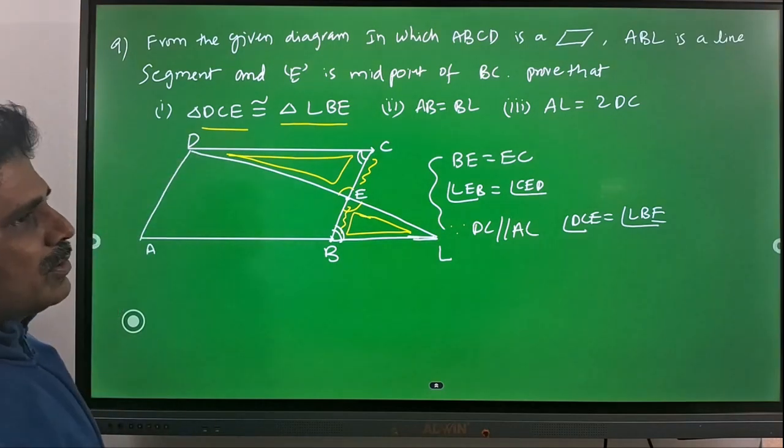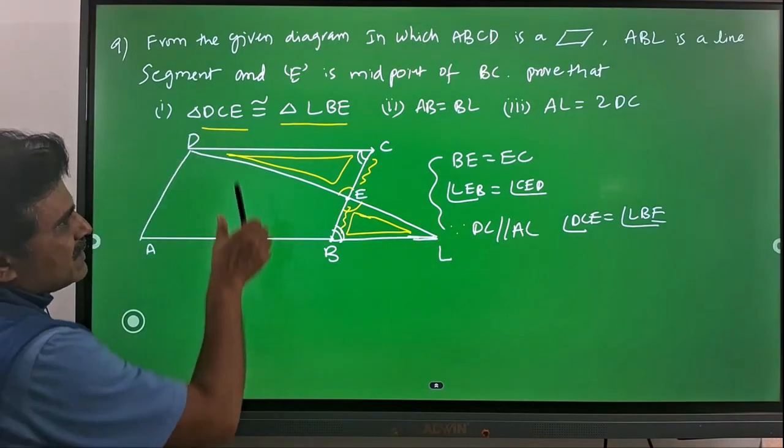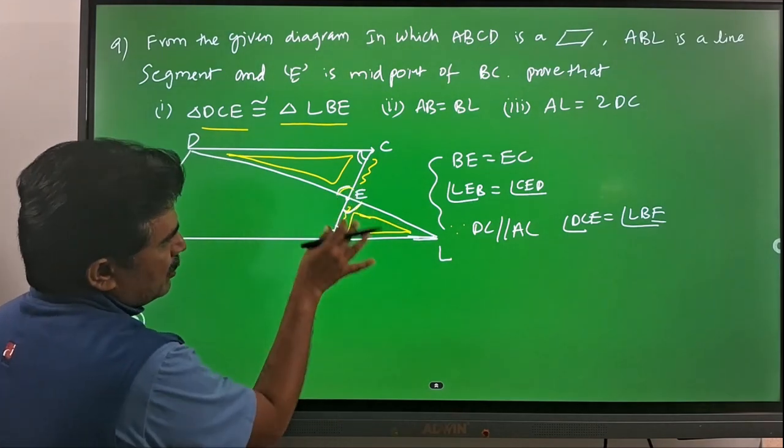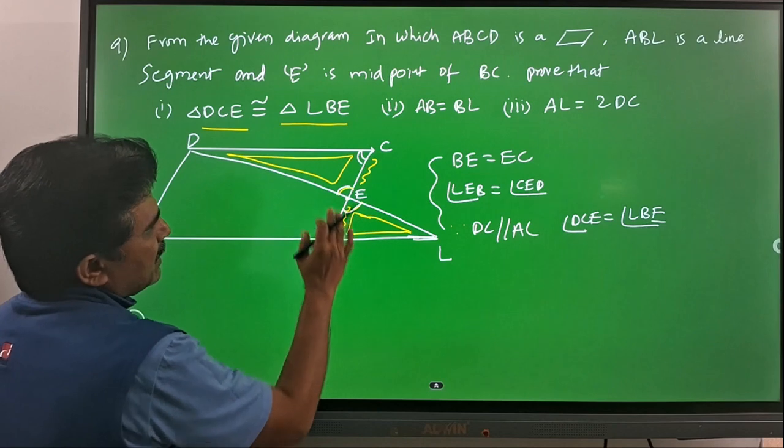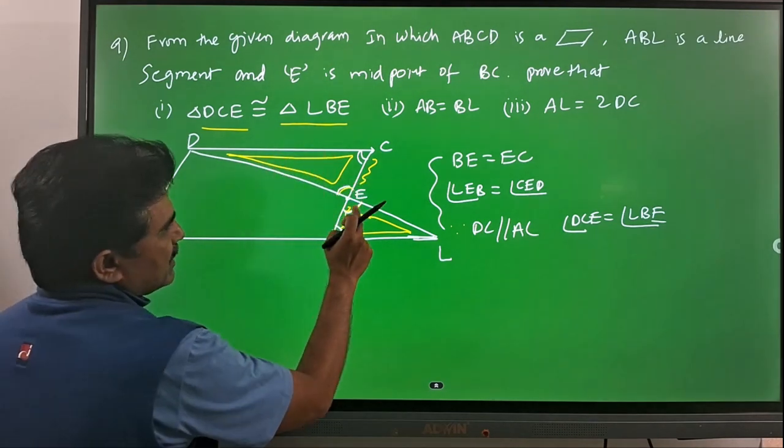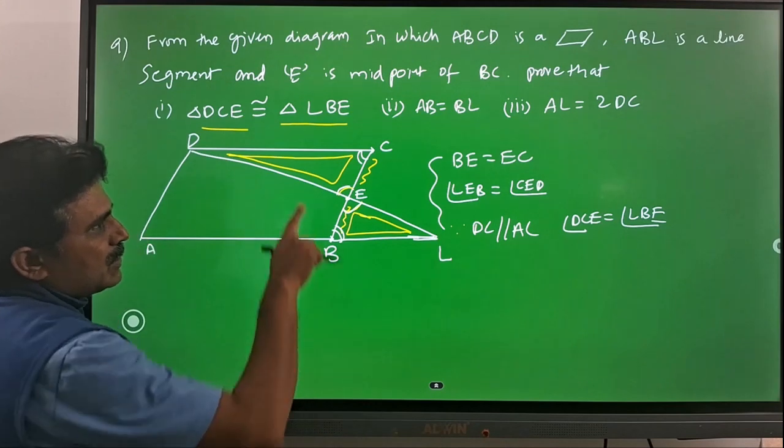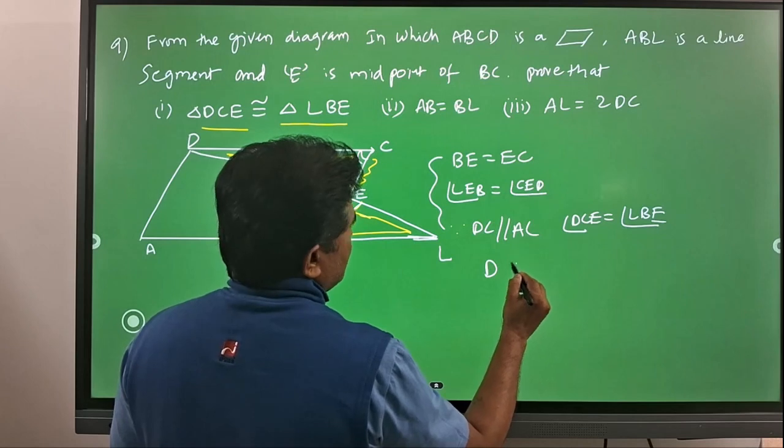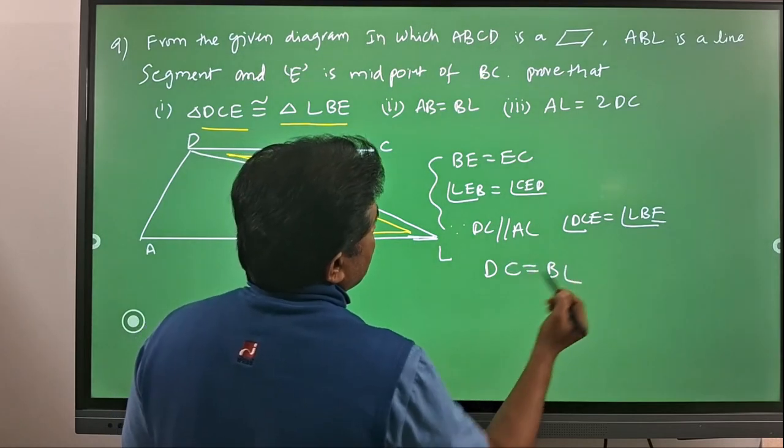These two are congruent and they respect to sides like DC and BL. We have equal angles, and they respect to opposite sides. DC is the opposite one for that angle, and for this angle BL is the opposite one. Those two are the same. That means from this we can say DC is equal to BL.